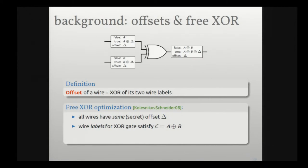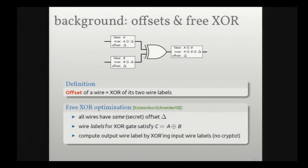So I don't have to send any ciphertext at all — you evaluate this garbled gate just by XORing the input wire labels. XOR gates are free, but I still have to garble the other non-XOR gates. So that's another way to reduce the size of a garbled circuit.